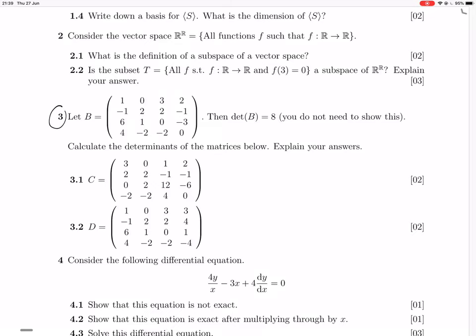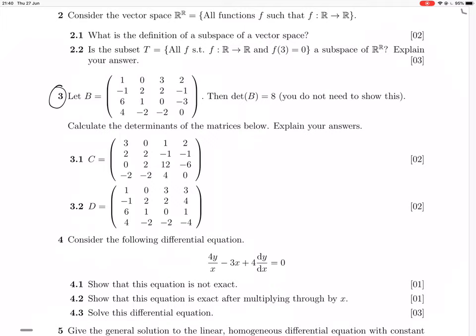Okay, so we're looking at question 3. They give us matrix B. They say its determinant is 8. They're not going to want us to show that. They want us to give the determinants of these other matrices. So presumably these other matrices, C and D, they come from B with some row reduction operations.